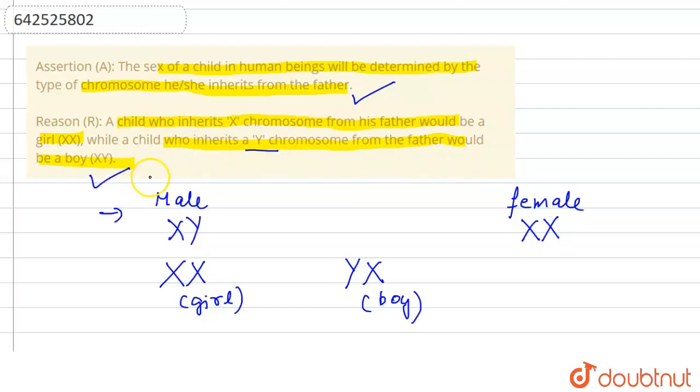So assertion and reason both are true. We could say both are true. And if we talk about the reason as explanation, this reason is the correct explanation to the assertion, making assertion and reason both true.